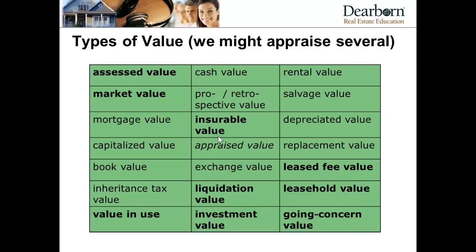Next, there's a table illustrating that there are many types of value. Market value is the most common one. Assessed value can vary based on the taxing authority, and you may be asked whether the assessed value is now above market value and should be adjusted. Insurance value is typically focused on what the improvements are worth — the total value of a property may be a million dollars, but if the land is worth $600,000, you'd only insure the $400,000 replacement value of the improvements.